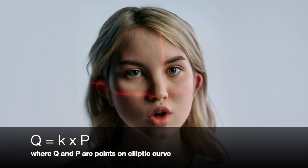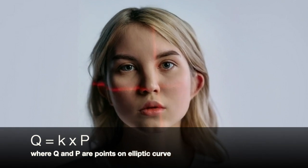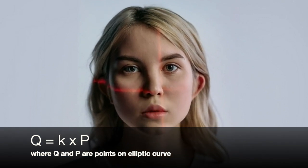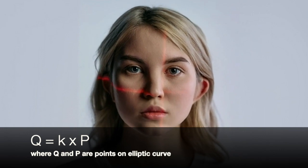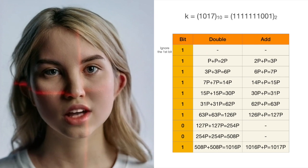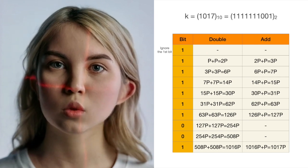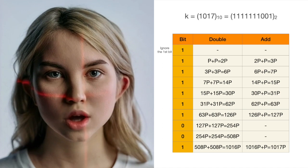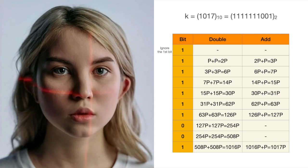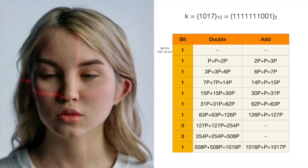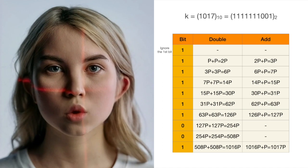We also have two points on the elliptic curve, let's call them q and p. We basically want to calculate q equals k times p. We initially set q to point p. We then go through the binary representation of our secret number, k, from left to right, one bit at a time. The first bit on the left will be discarded.